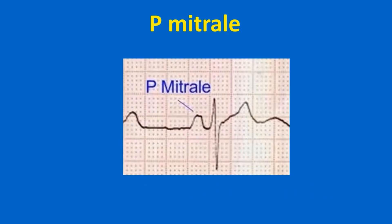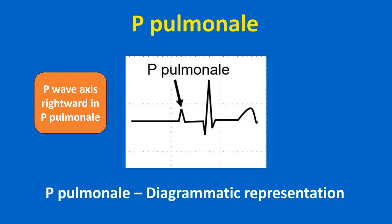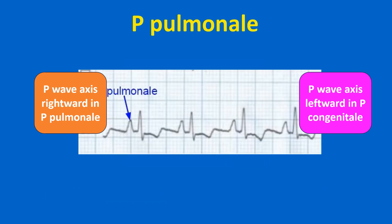A magnified ECG tracing showing P mitral in left atrial overload. Tall peaked P wave of right atrial enlargement seen in cor pulmonale is known as P pulmonale. The tall P of right atrial enlargement in congenital heart disease is called P congenital. P wave axis is rightward in P pulmonale while it is leftward in P congenital. The initial spike in V1 more than 1.5 mm is also a feature of right atrial enlargement.